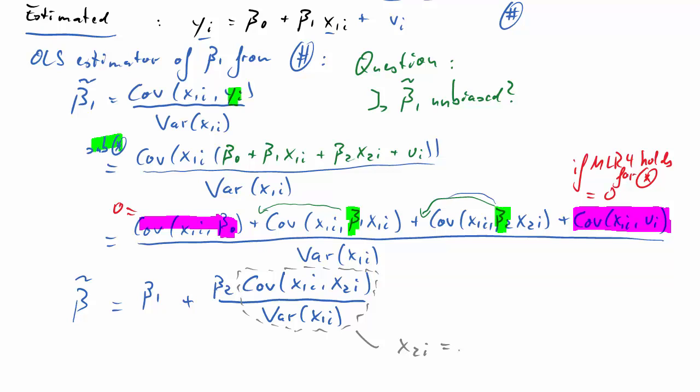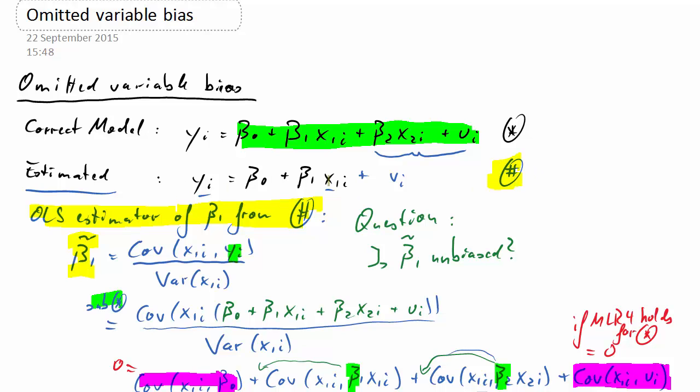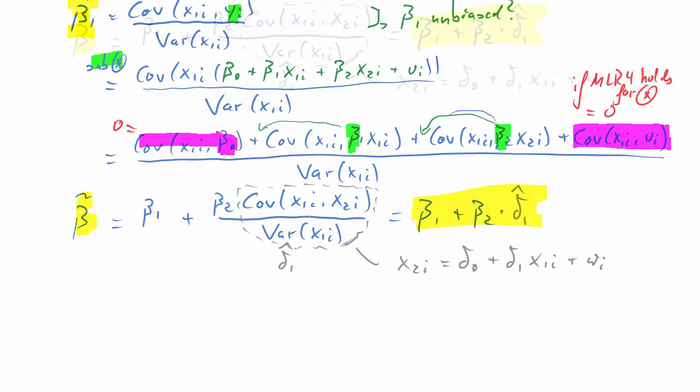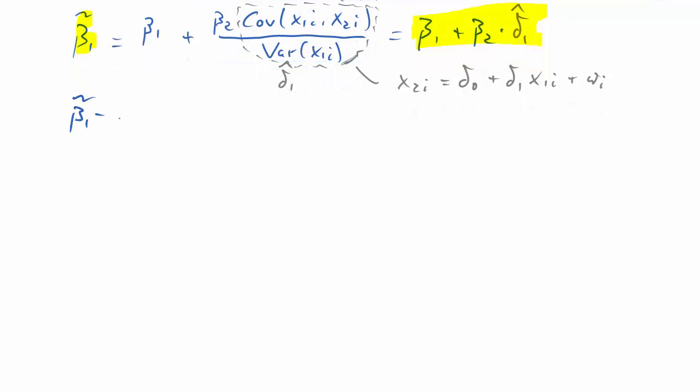It turns out this will be the OLS estimator of the coefficient delta 1 in this regression: x2 as the dependent variable and x1 as the explanatory variable. So that term tells us something about the relationship between x1 and x2. So beta 1 tilde is beta 1 plus beta 2 times delta 1 hat. Now we're just going to bring that beta 1 term to the left-hand side. So we get beta 1 tilde minus beta 1 equals beta 2 times delta 1 hat.